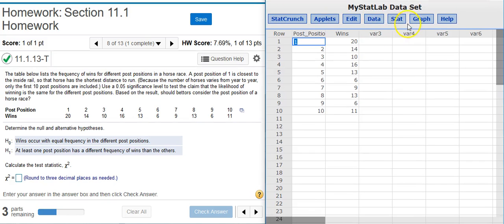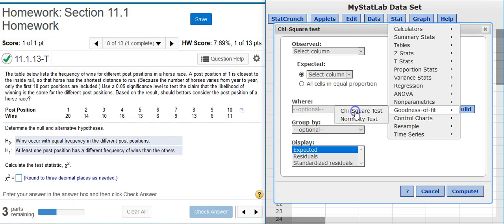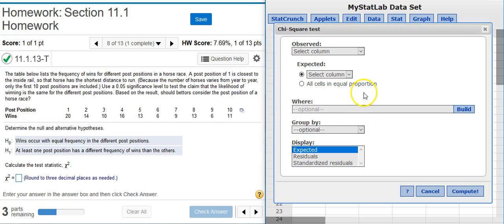And now to conduct the actual test, I'm going to go into Stat and then come down here to goodness of fit chi-squared test because we're looking for a chi-squared test statistic, as you can see down here. Then I need to put in values for observed and expected values. Here in the observed, I'm going to select the frequencies that we've seen with the different post positions.